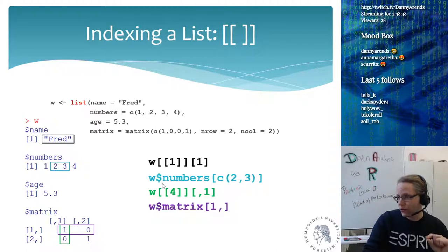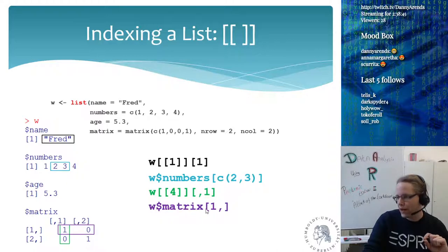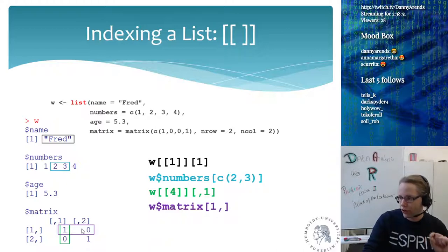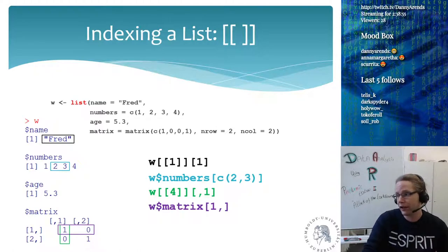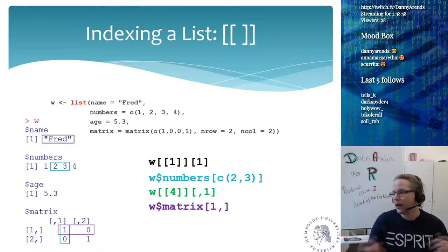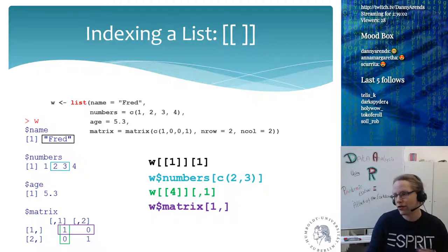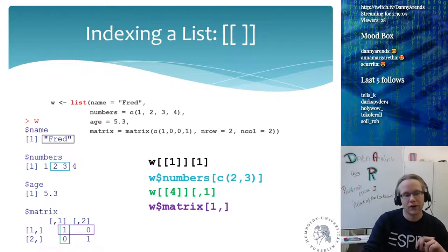It's better to use the dollar sign because it's much clearer — for example, w$matrix[1,] gives you the first row of the matrix. Double square brackets are used with lists, and that's just the way it is. It's because a list can contain anything, so you have to be explicit about which element you're selecting. Double square brackets: only use with lists.